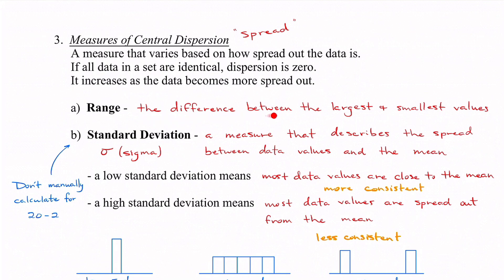Range is the difference between the largest and smallest values — you want to figure out what that spread is from small to big. Standard deviation uses the symbol sigma (σ), the Greek letter, and it's a measure that describes the spread between data values and the mean. Basically it tells you how far off you are from the mean. In this class we're not going to be calculating it by hand — we're going to be using our graphing calculator.